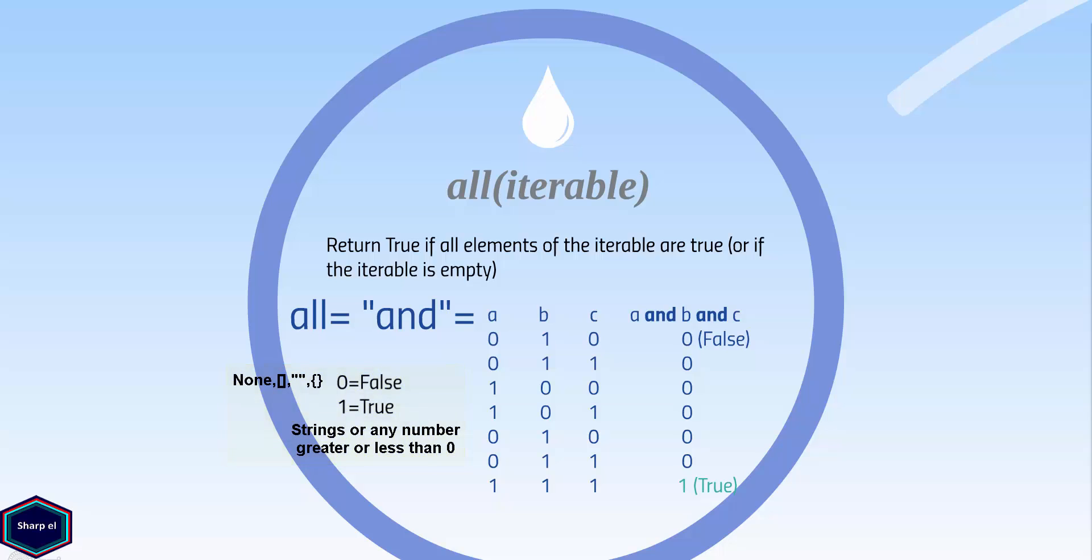As you can see in the truth table, we have three variables: variable a, b, and variable c. An AND operator is only true when all variables are also true.